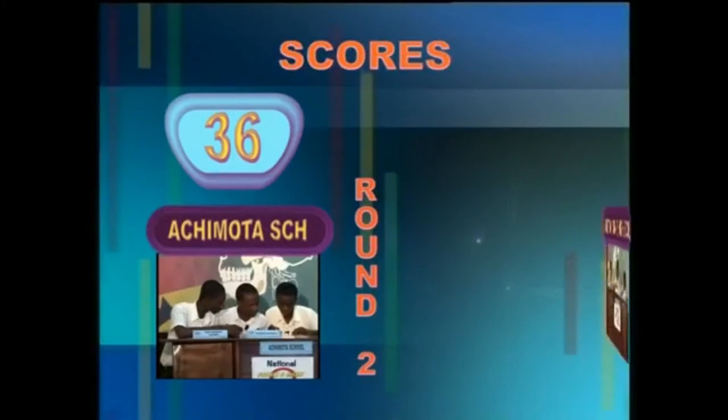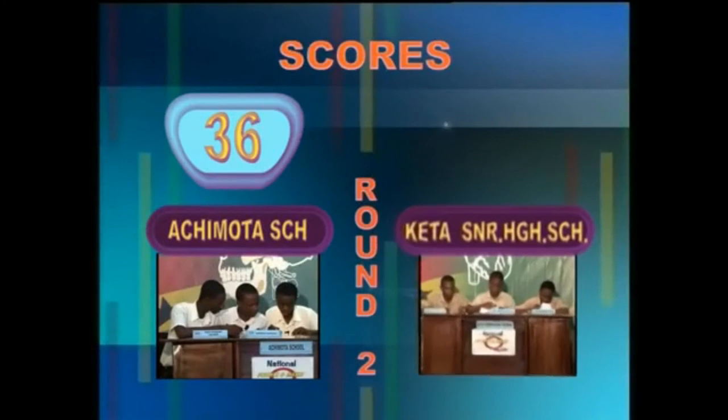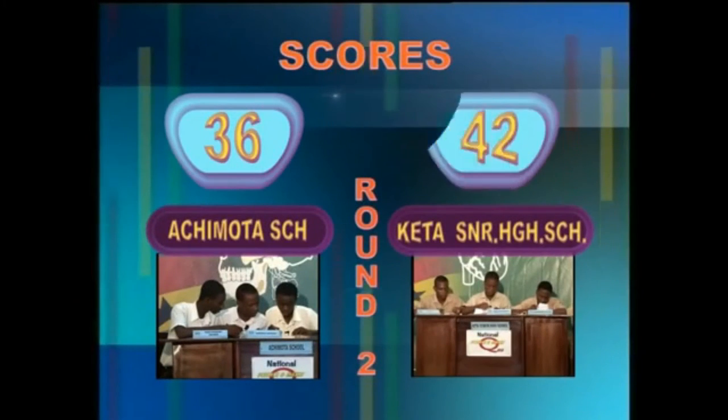At the end of the second round, the scores are Achimota School 36 points, Keta Senior High School 42 points.